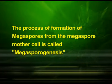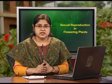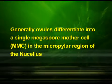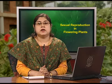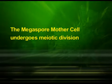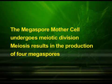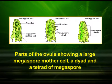Now let us discuss the process of megasporogenesis. The process of formation of megaspores from the megaspore mother cell is called megasporogenesis. Generally, ovules differentiate into a single megaspore mother cell in the micropylar region of the nucellus. It is a large cell containing dense cytoplasm and a prominent nucleus. The megaspore mother cell undergoes meiotic division, resulting in the production of four megaspores. We can observe the parts of the ovule showing a large megaspore mother cell, a dyad, and a tetrad of megaspores in these diagrams.